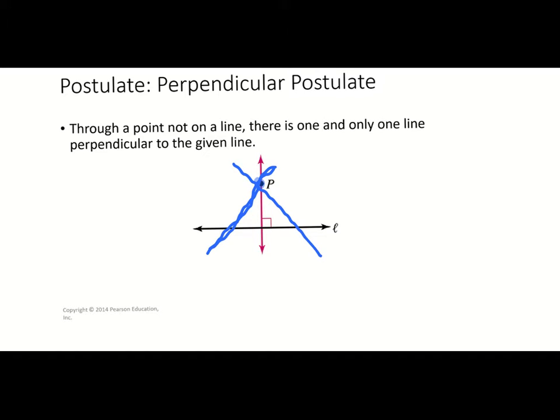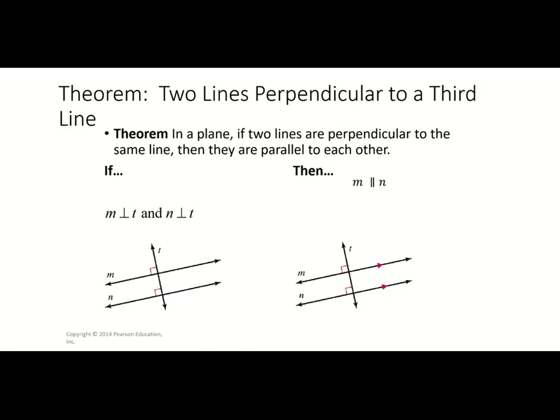but the only one — there's only going to be one line that I can draw from point P to line L that will be perpendicular and form that 90-degree angle. Next we have a theorem: two lines perpendicular to a third line. In this theorem we have to have lines in the same plane. If two lines are perpendicular to the same line, then they are parallel to each other. We know that M is perpendicular to T and N is perpendicular to T. Because both of those lines are perpendicular to T, that means they are also parallel — the lines have the same slope and meet the line at the same angle, forming that 90-degree angle.